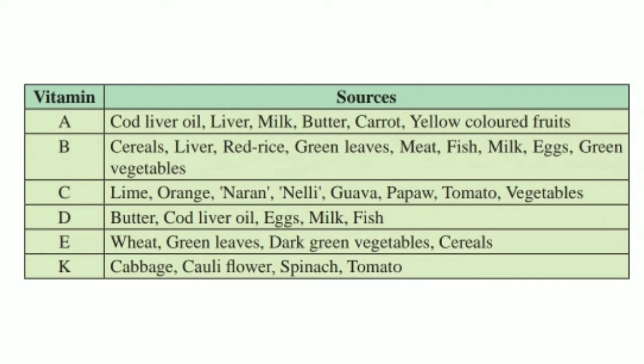Vitamin C is found in lime, oranges, narum, guava, pepper, tomato and vegetables. Vitamin D is found in butter, cod liver oil, eggs, milk and fish. Vitamin E is found in wheat, green leaves, dark green vegetables and cereals — so Vitamin E is mostly found in green leaves and green colored vegetables.